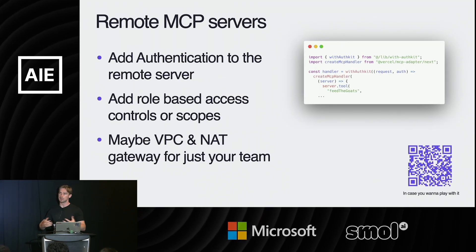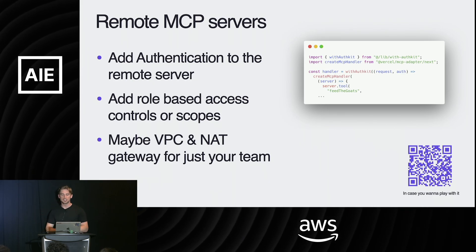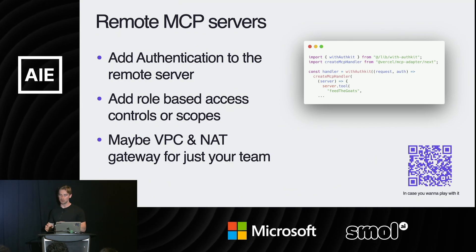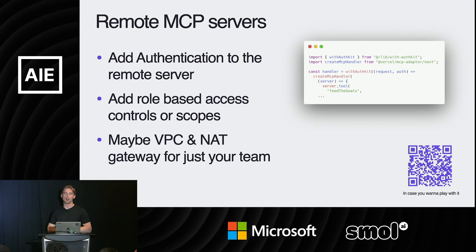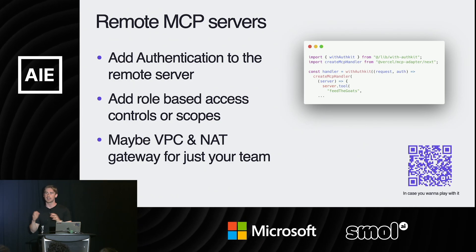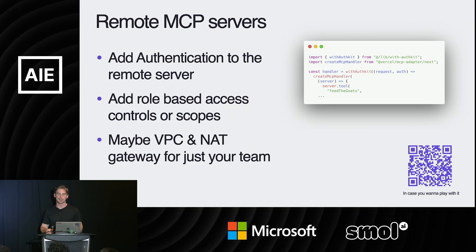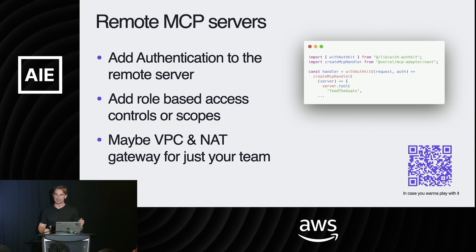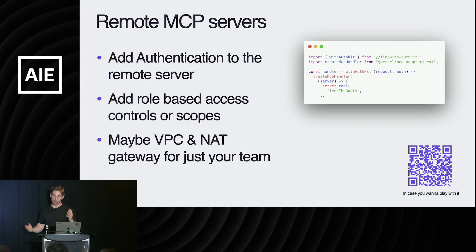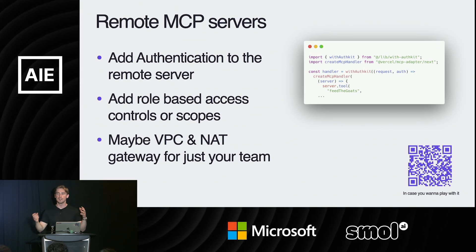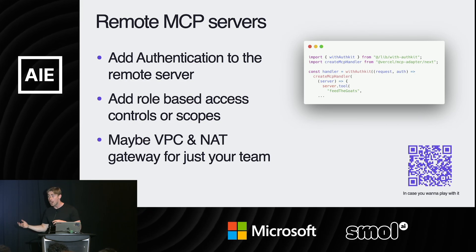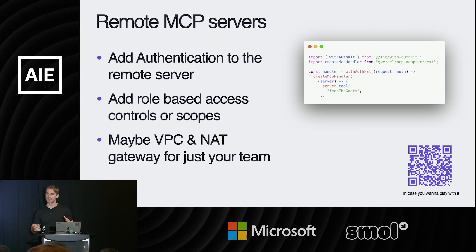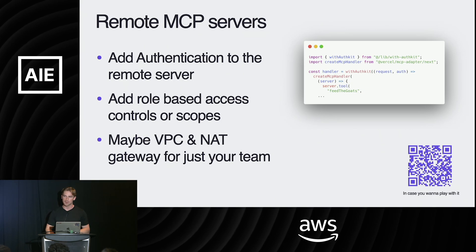The next step that everyone's been discussing is adding authentication and authorization to these workloads — which is truthfully the main thing you need to do right now. You should not have an external API that is unauthenticated with no access controls. Things will go very wrong. So: make people log in, scope appropriately — make sure no one is feeding the goats too much — and if you're doing this internally, put it in a VPC with a gateway so only authorized users can access it.